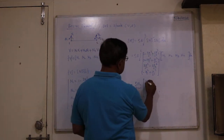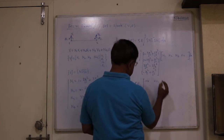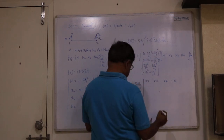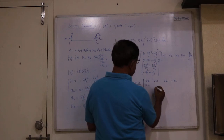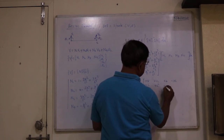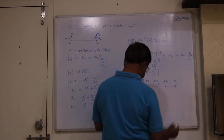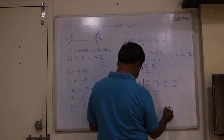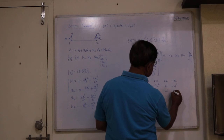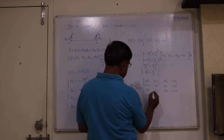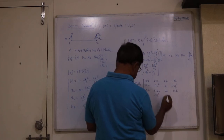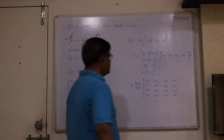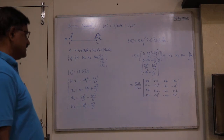The consistent mass matrix for the beam element is ρAL/420 times the 4×4 symmetric matrix: [156, 22L, 54, −13L; 22L, 4L², 13L, −3L²; 54, 13L, 156, −22L; −13L, −3L², −22L, 4L²]. This is the consistent mass matrix for the beam element.